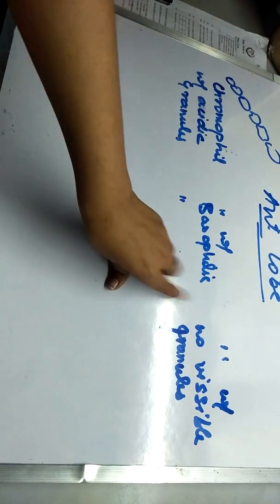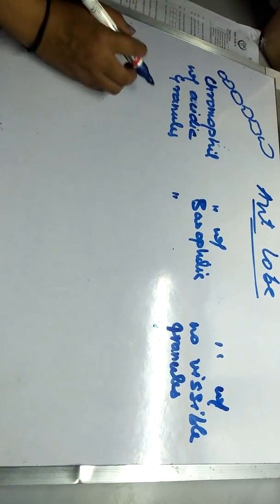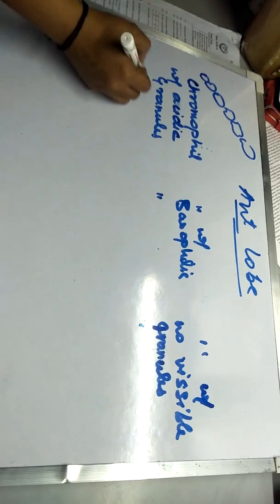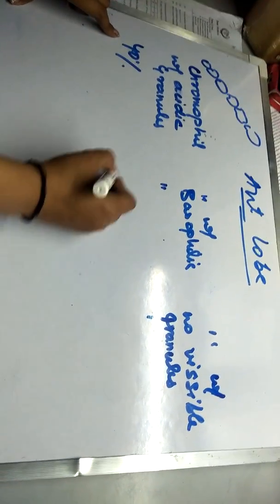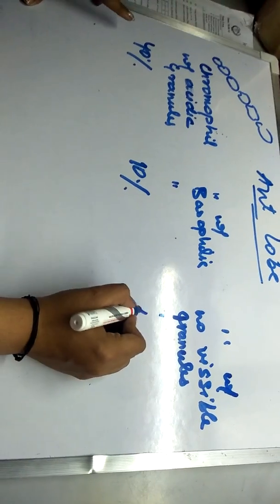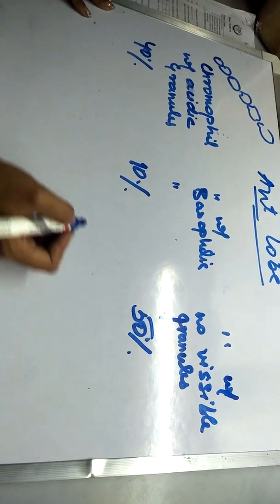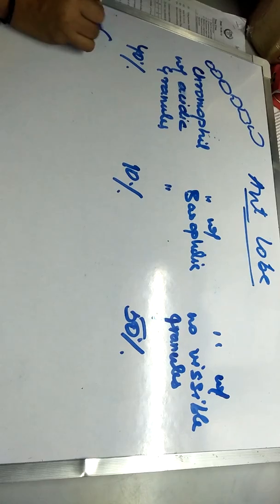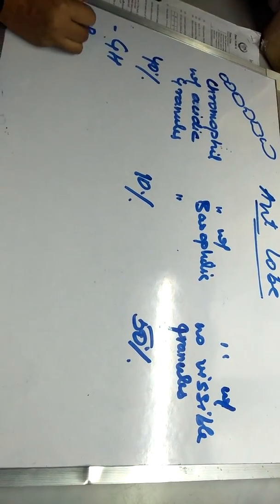The acidic granules make up 40% of the anterior lobe, basophilic granules 10%, and the no visible granules (chromophobes) 50%. The acidic granule cells secrete growth hormone and prolactin.